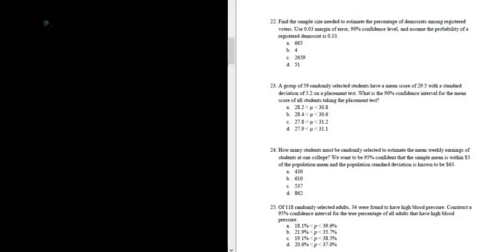We have to find a 90% confidence interval for a mean. So they give us the 59, that's going to be the sample size. So the sample size is 59. The mean score of 29.5, that's the sample mean, so x-bar is equal to 29.5.